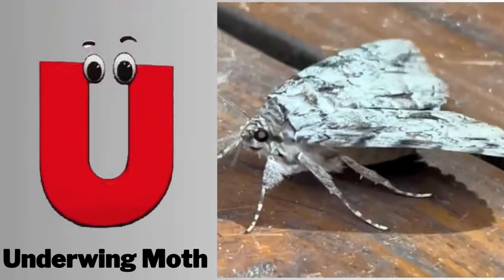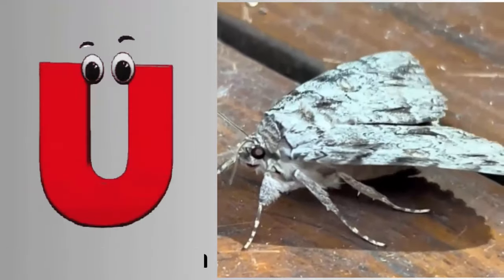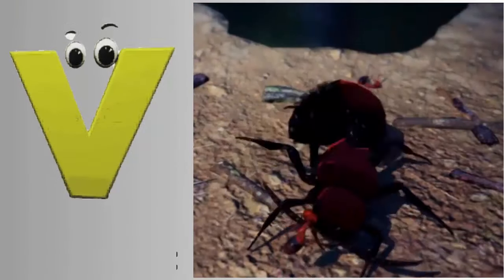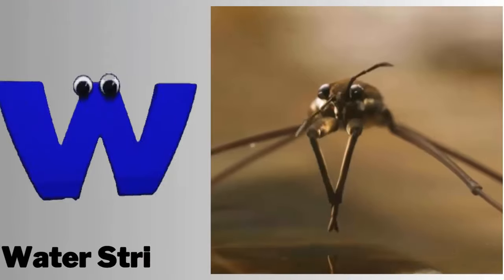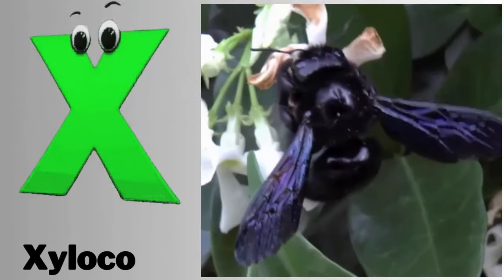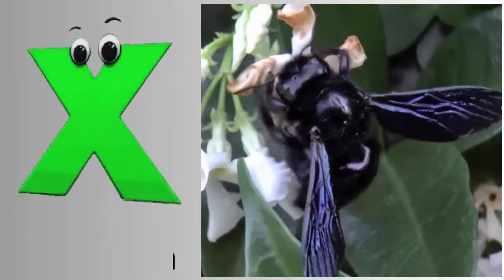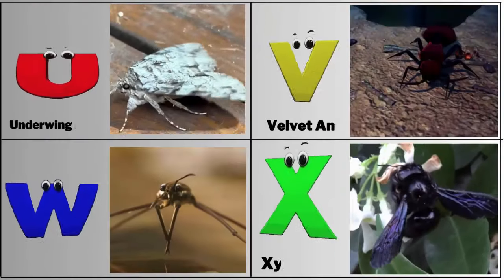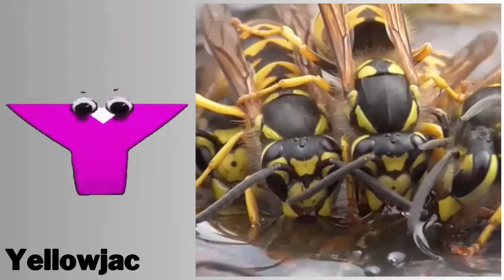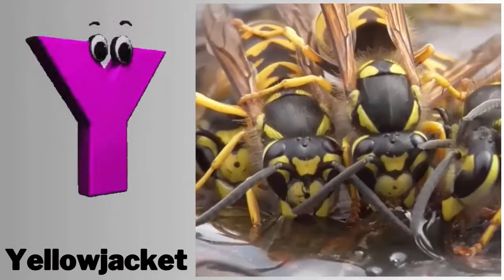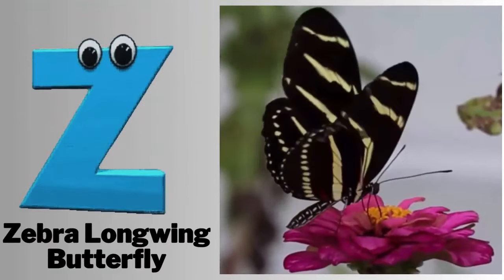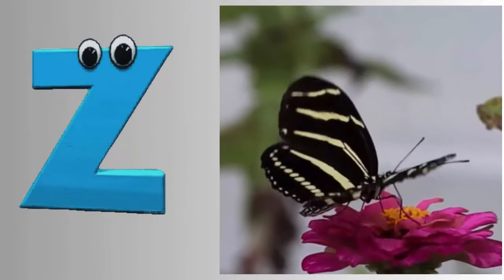U. U for underwing moth. V. V for velvet ant. W. W for water strider. X. X for xylocopa. Y. Y for yellow jacket. Z. Z for zebra longwing butterfly.